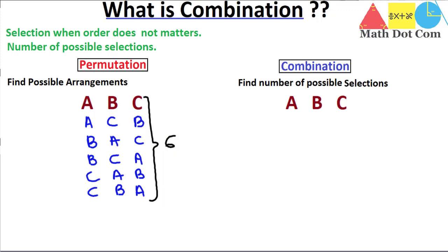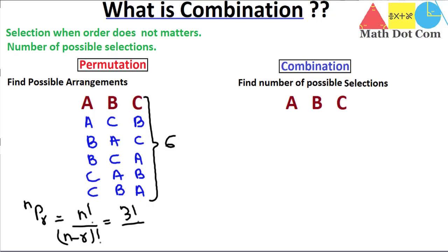So we will have six permutations. Using the formula, it is N factorial divided by N minus R factorial, where N is the total number of letters, which is 3 factorial, and R, the number of selected letters, is also 3. So 3 minus 3 gives 0 factorial, which equals 1, and the result comes out to 6.